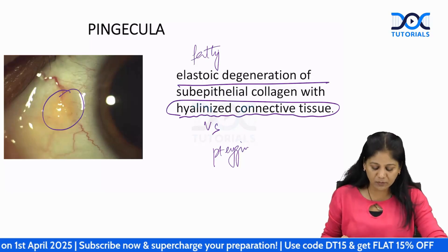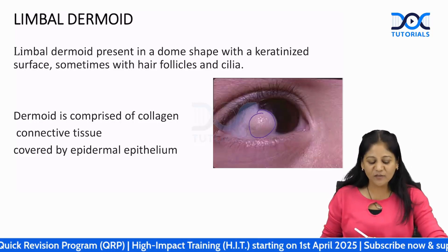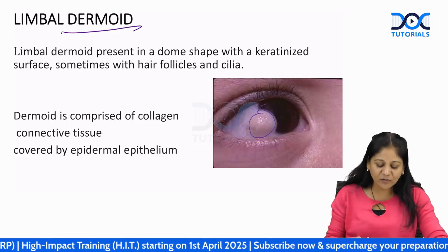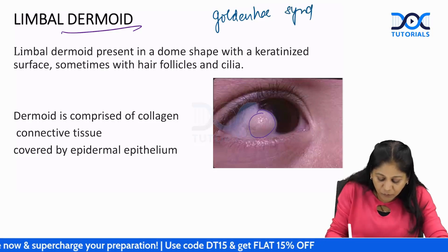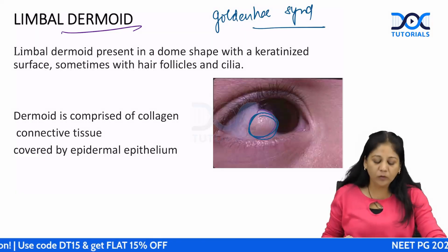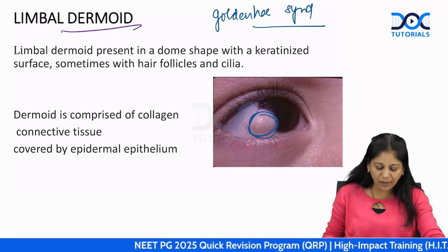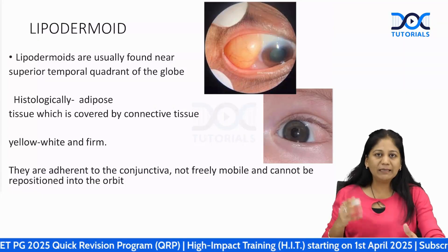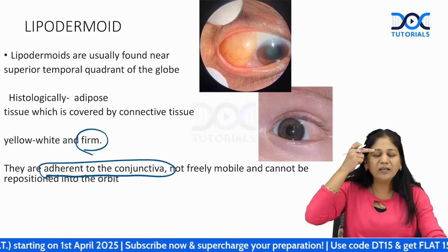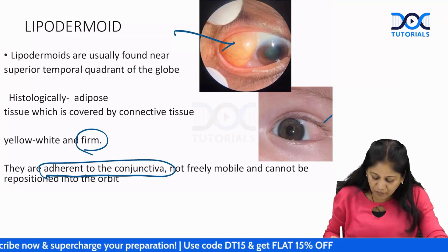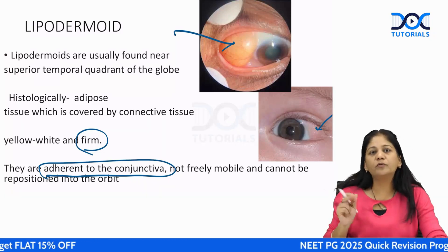Another nodule near the limbus — not a phlycten, not episcleritis — is a limbal dermoid, a classic picture question. Dermoid occurs at the junction of the cornea, conjunctival epithelium, and limbus, as seen in Goldenhar syndrome. Lipodermoid differs: it is slightly adherent to the conjunctiva, firmer, and comes from the temporal aspect.